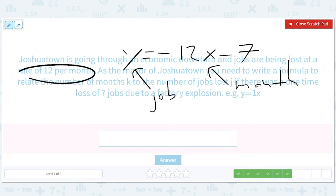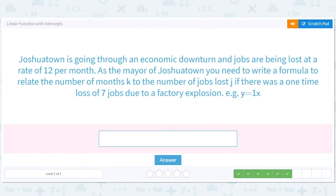And now we have to do this silly thing where we translate between these letters and jobs. So at least here jobs is J, that makes sense. And months is K. So J equals negative 12K minus seven. Just check our work. Seven jobs. K is the number of months. Negative 12 rate per month. J is jobs.